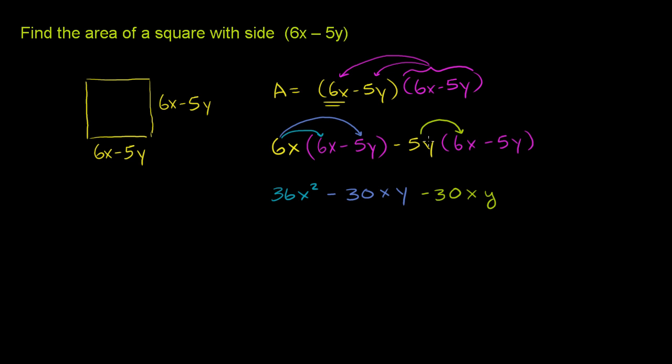Let me do that maybe in white. I have a negative 5y times another negative 5y. So the negative times the negative is a positive, so it is positive. 5 times 5 is 25, y times y is y squared. And then we are almost done right over here. We could say, we can just add these two terms in the middle right over here. Negative 30xy minus 30xy is going to be negative 60xy. So you get 36x squared minus 60xy plus 25y squared.